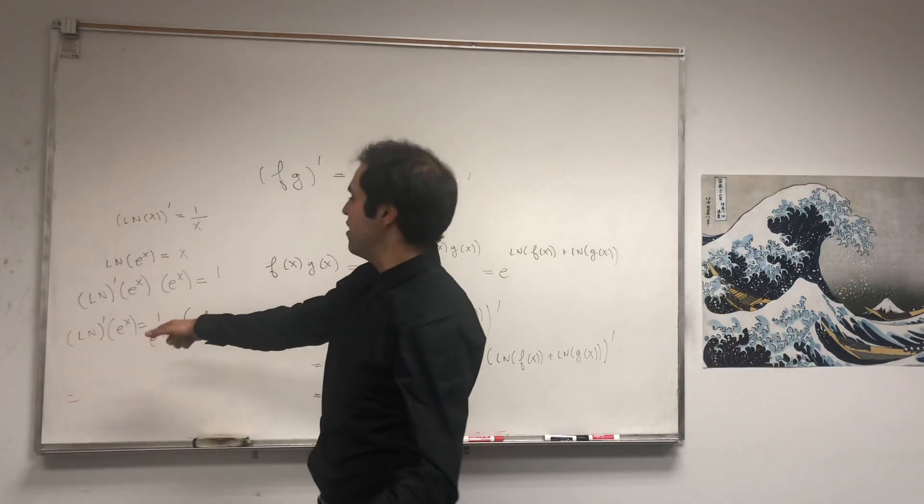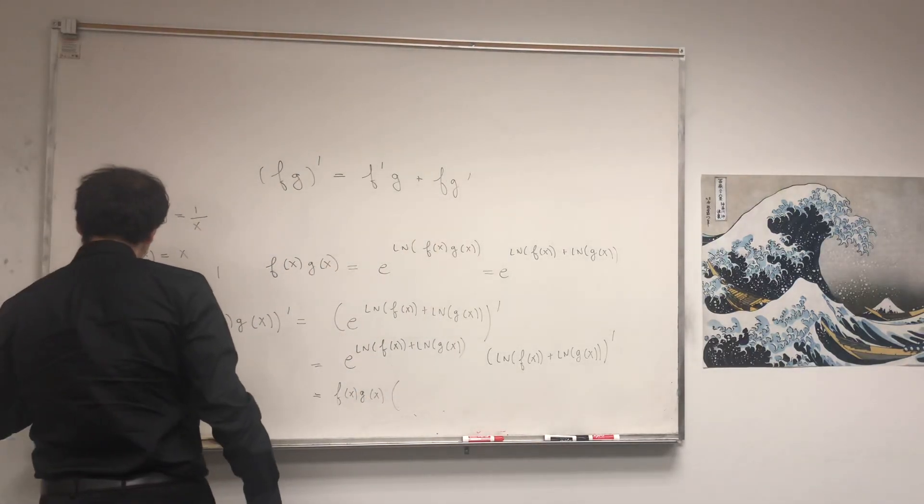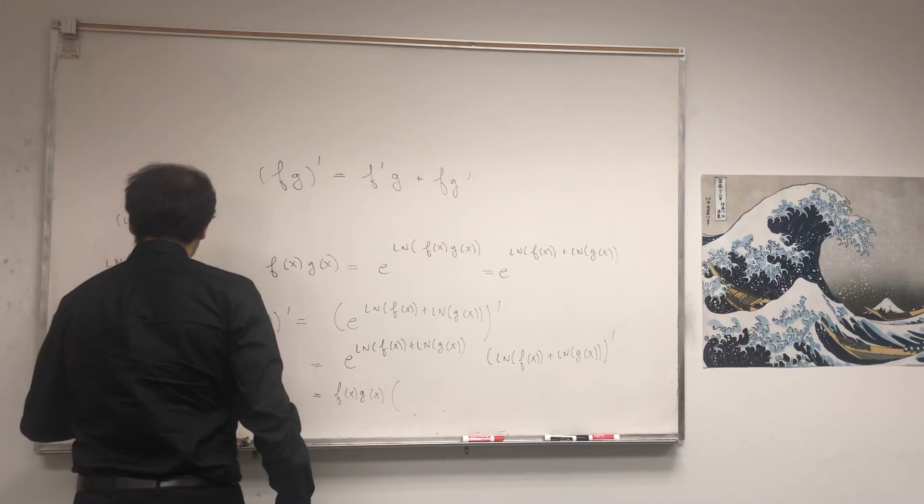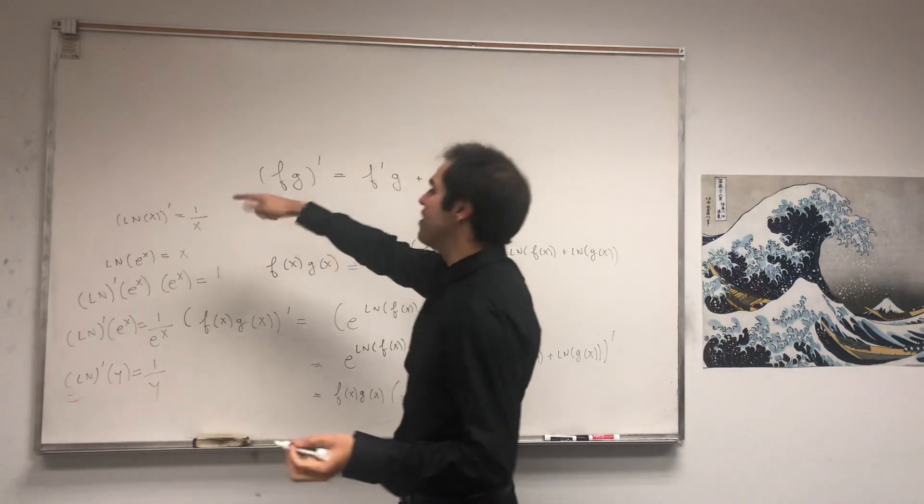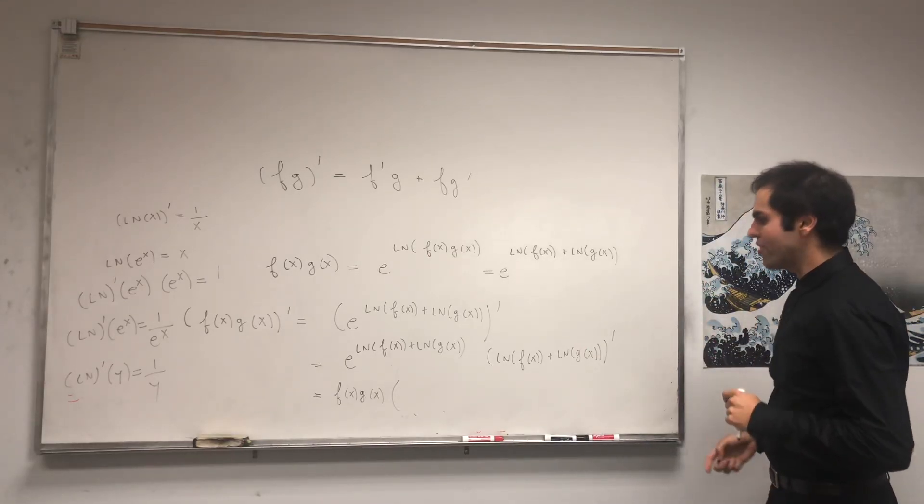So ln prime of y is 1 over y. In other words, the derivative of ln of x is 1 over x.